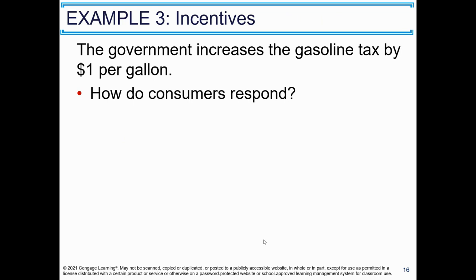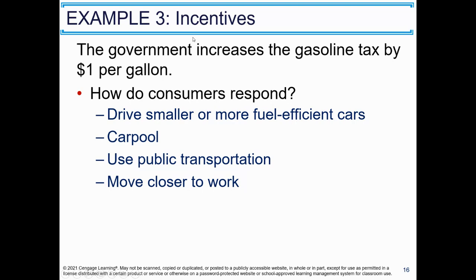Example three — incentives: if the government increases the gasoline tax by $1 per gallon, how do consumers respond? They drive smaller cars or more fuel-efficient cars. They carpool more. They use public transportation. They move closer to work. People respond to incentives.